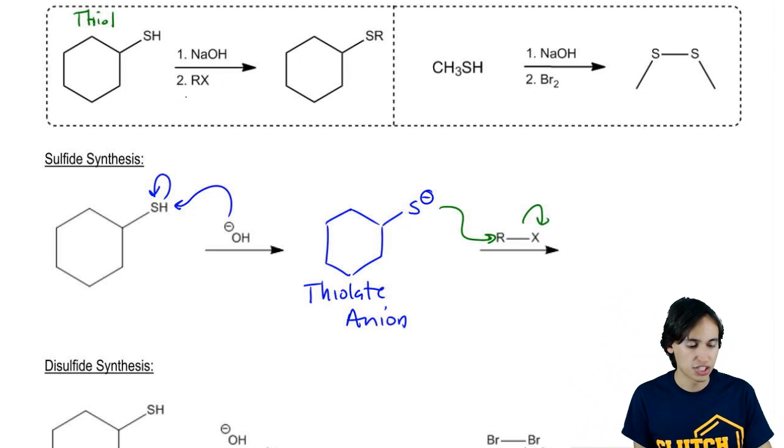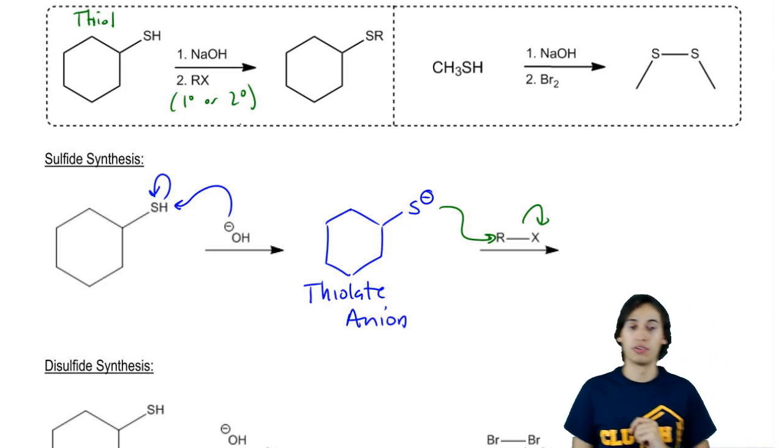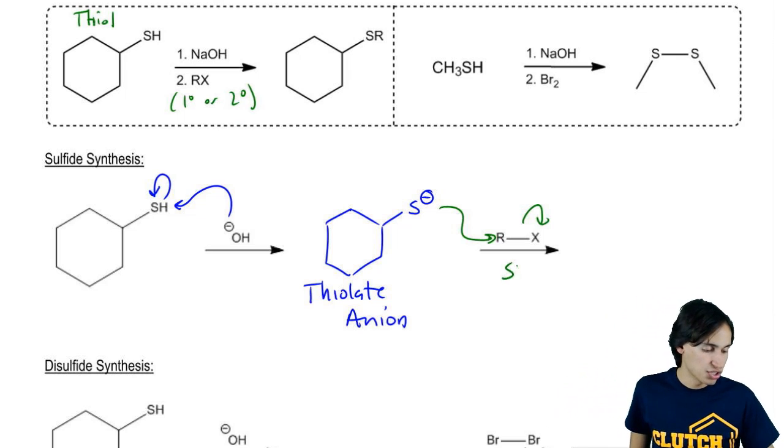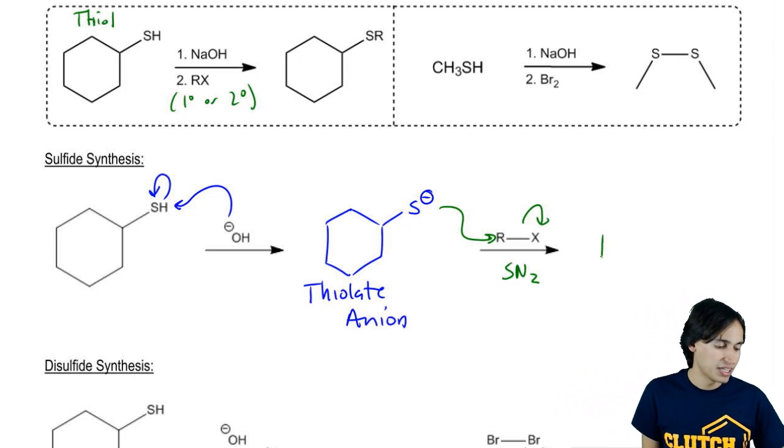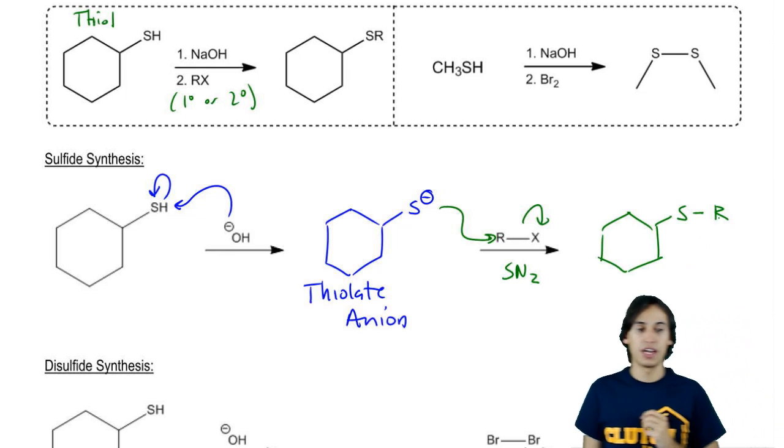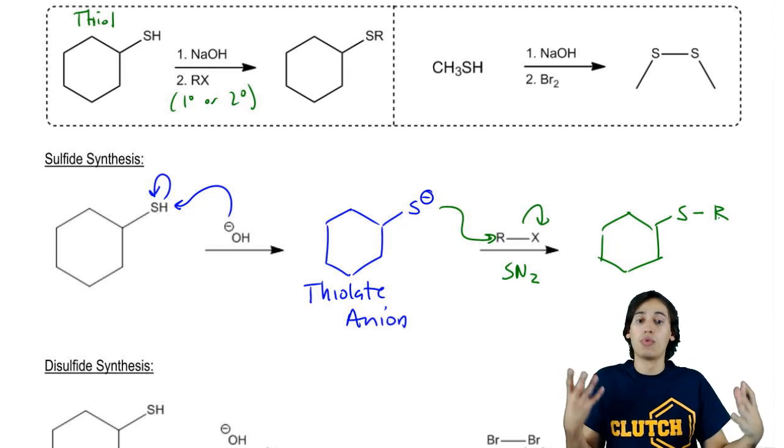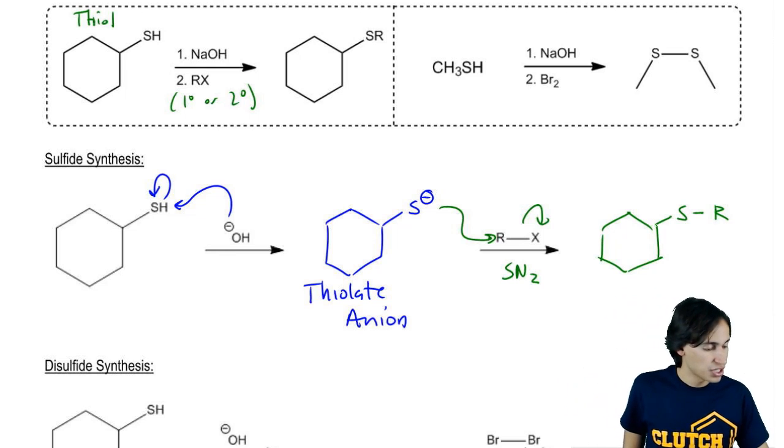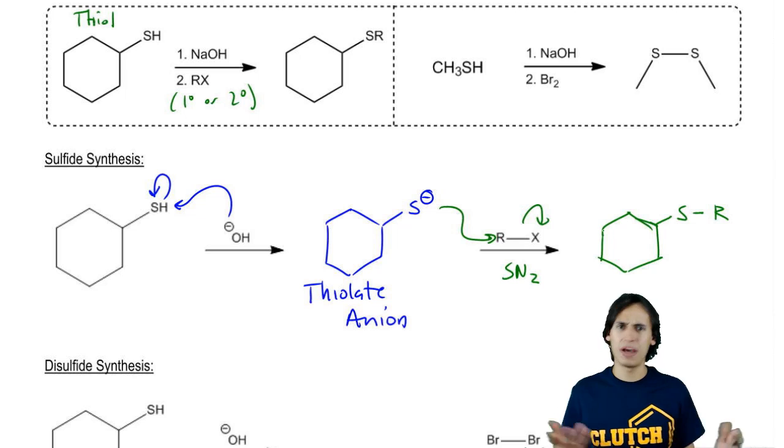So I'm just going to add here that this would have to be a primary or secondary alkyl halide. So now I've got my backside attack, my SN2 reaction, and what I'm going to get as my product is simply a sulfur with now whatever that R group was. Now whatever that R group, it could be whatever I wanted. I just pick the alkyl halide of choice. So that's how we make a sulfide out of a thiol. Not bad at all, right?